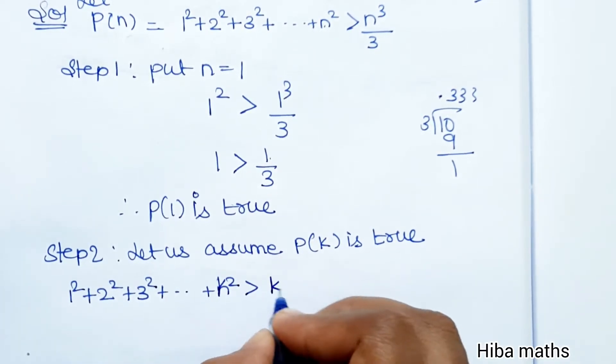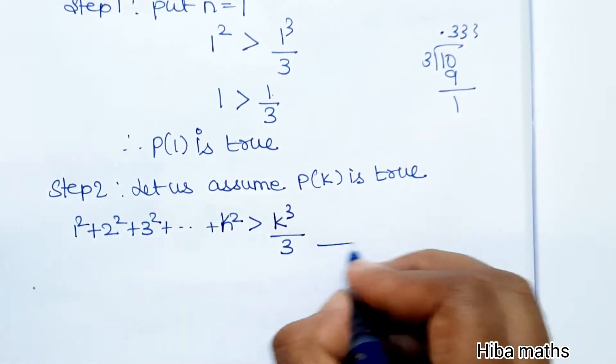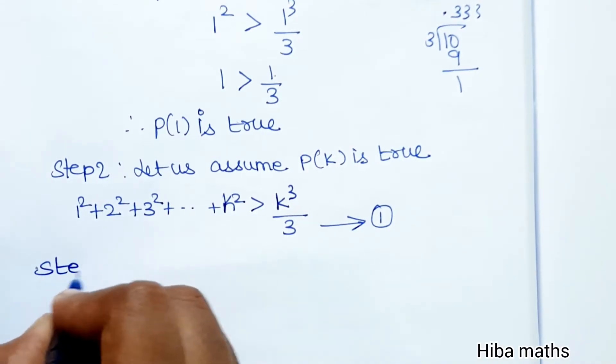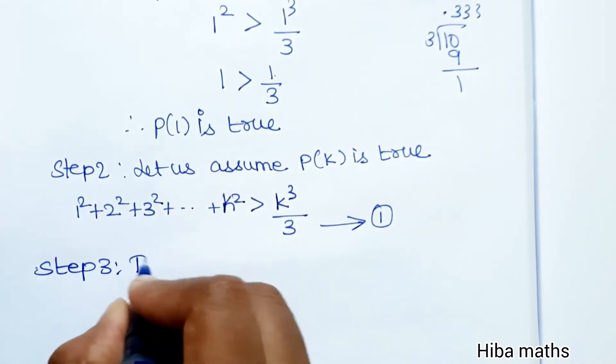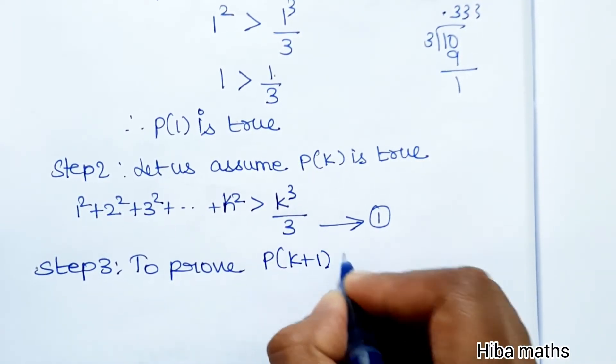Step 2: Let us assume P(k) is true, so 1² + 2² + 3² + ... + k² > k³/3. This is the first result we get. Step 3: To prove P(k+1).